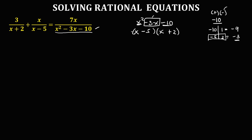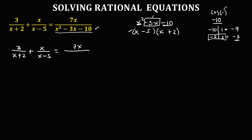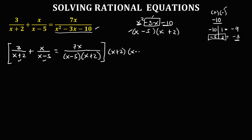So we need to rewrite this equation using its factors. The new equation is: 3 over (x plus 2), plus x over (x minus 5), equals 7x over the factors of this quadratic equation. For the first denominator we have x plus 2, and for the second denominator, that's x minus 5.